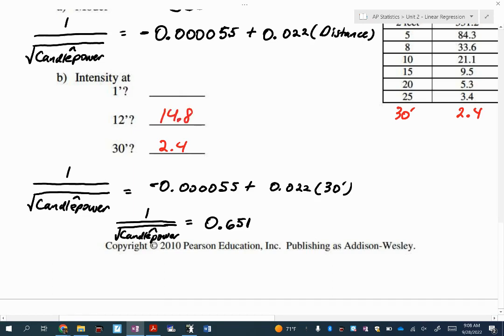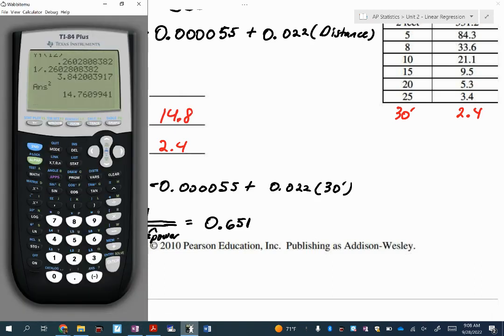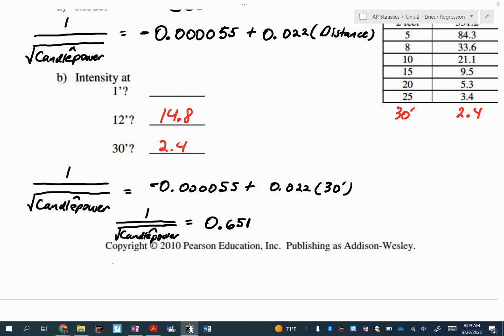Finally, at one foot. Evaluating this at one foot, doing one divided by that, and then squaring it to get just candle power by itself is 2135.6.